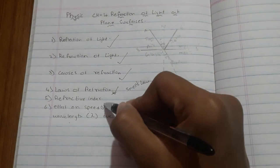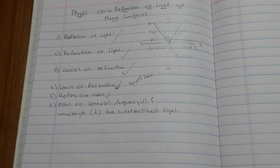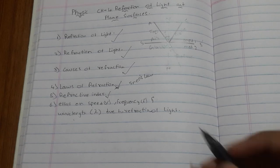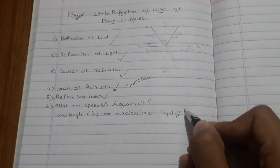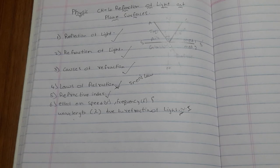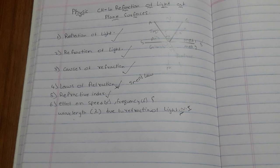The main point of this chapter is the effect of refraction on speed, frequency, and wavelength. When a ray of light gets refracted from a rarer to a denser medium, the speed of light decreases. If refracted from a denser to a rarer medium, the speed of light increases. For example, light moving from glass to air increases in speed, while moving from air to glass it decreases.